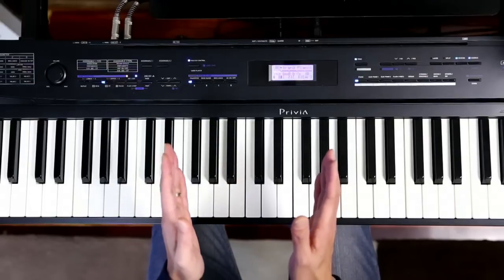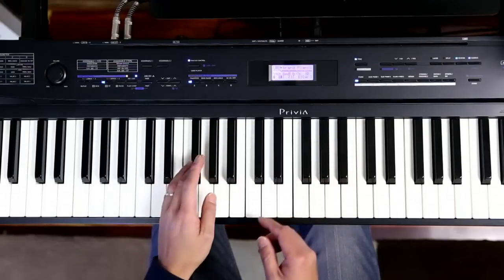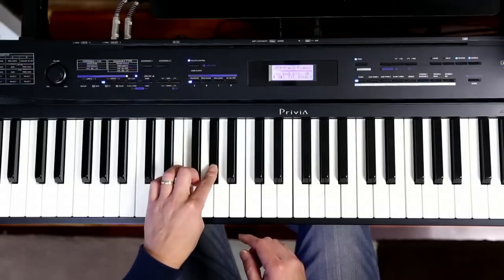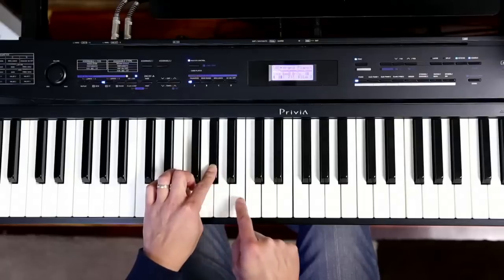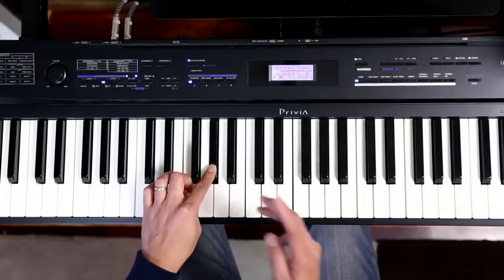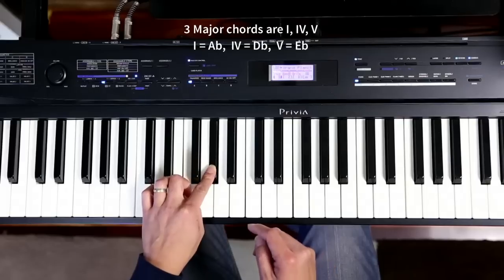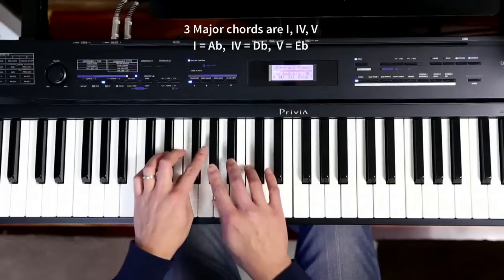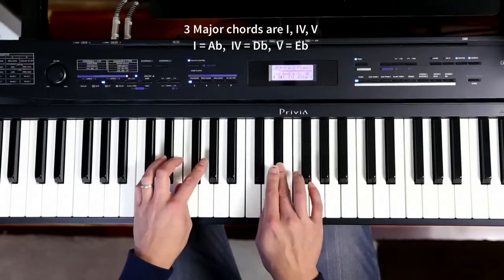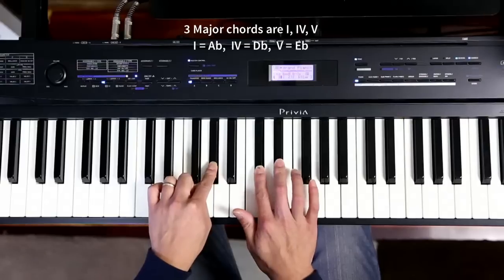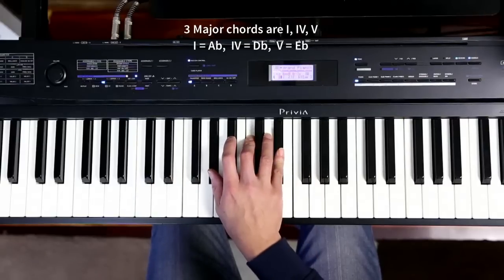Now, in our key of A flat, let's look at the chord positions, just very quickly. We've got A flat as the one of the key, the first note in the scale, and the three major chords that we'll be looking at are the one, the four, and the five—the first, fourth, and fifth. So, one, two, three, four, five. A flat, D flat, and E flat are the three major chords in this key.